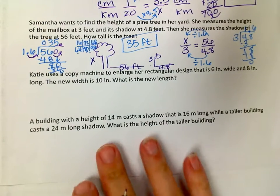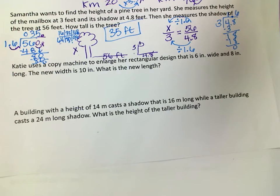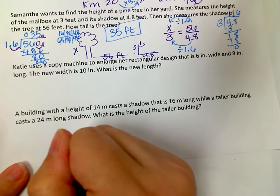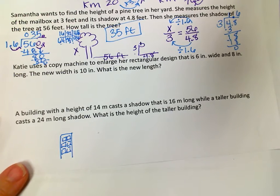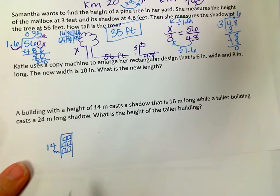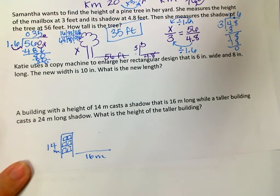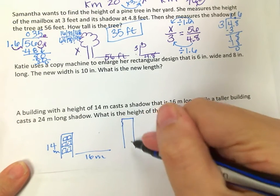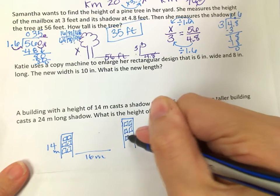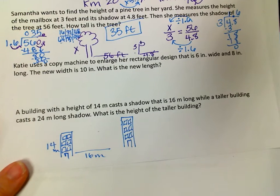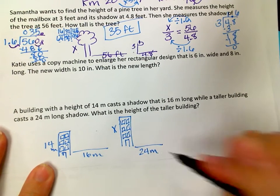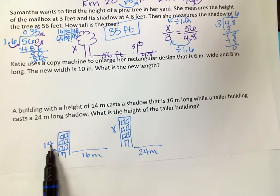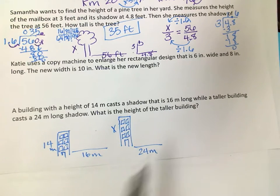A building with a height of 14 meters casts a shadow that's 16 meters long, while a taller building casts a 24-meter shadow. What is the height of the taller building? I'll draw both buildings: the first is 14 meters tall with a 16-meter shadow, and the second is taller with an unknown height but a 24-meter shadow.